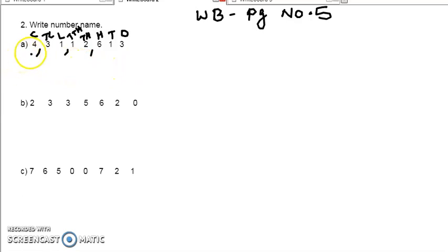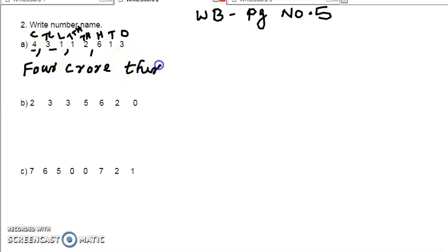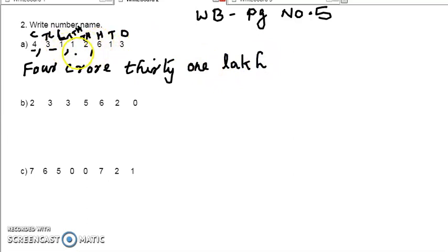Now we can start to read. The first number up to the first comma — that is 4. So we write 4. The place name on the top, we can see that is crore. So we write 4 crore. Then the next 2 digits we read — that is 31. On the top of that we can see the place name: lakh. So 31 lakh. Then up to the next comma we read — that is 2 digits: 12. So we write 12. The place on top of that 12 is 1000. So 12,000. Now the remaining 3 digits together we read — that is 630.